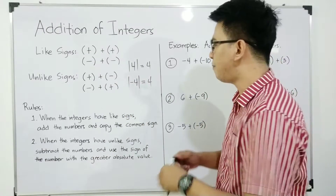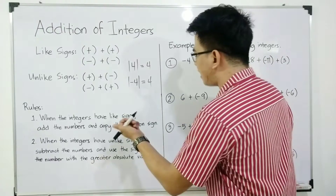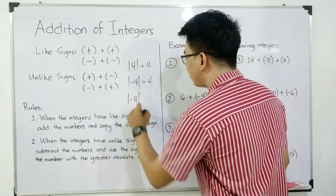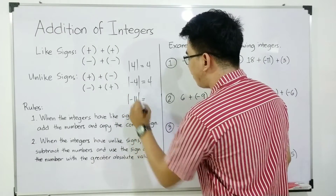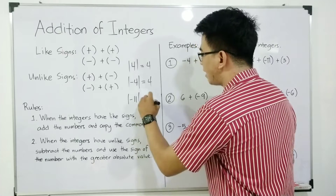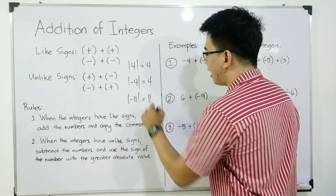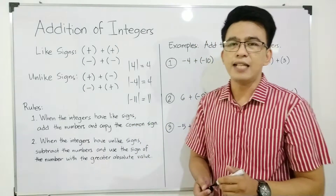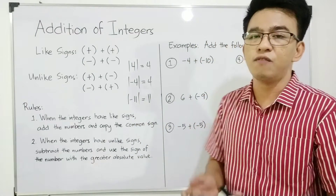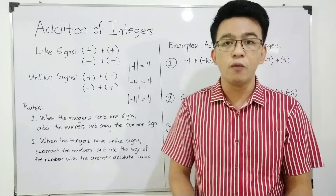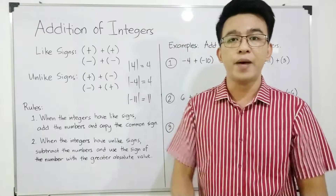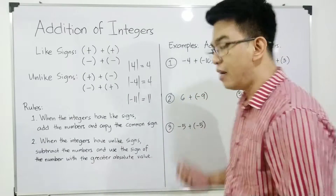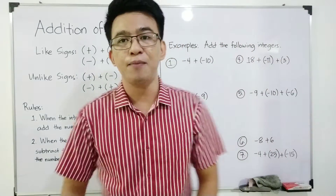Another jackpot. What is the absolute value of negative 11? Definitely, the answer is 11. So, as you can see, yung answer natin sa absolute value is always positive. Now, let's have the examples.